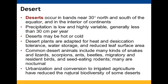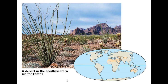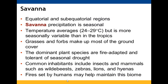Deserts occur in bands around 30 degrees north and south of the equator and in interior continents. Precipitation is low and highly variable, typically less than 30 centimeters per year. They can be hot or cold. Plants are adapted for heat and desiccation tolerance, able to store water and having reduced leaf surface area to minimize water use. Common desert animals include snakes, lizards, scorpions, ants, beetles, migratory and resident birds, and seed-eating rodents, many of which are nocturnal. Urbanization and irrigated agriculture have reduced natural desert biodiversity.